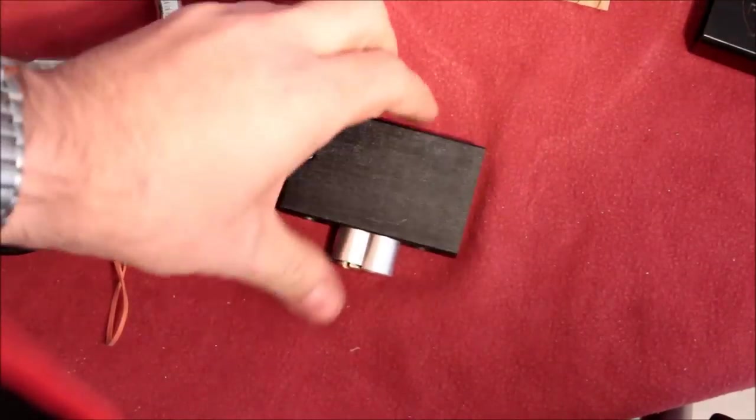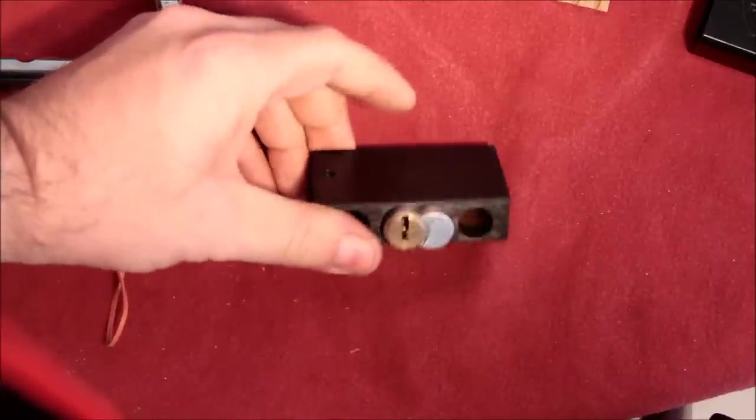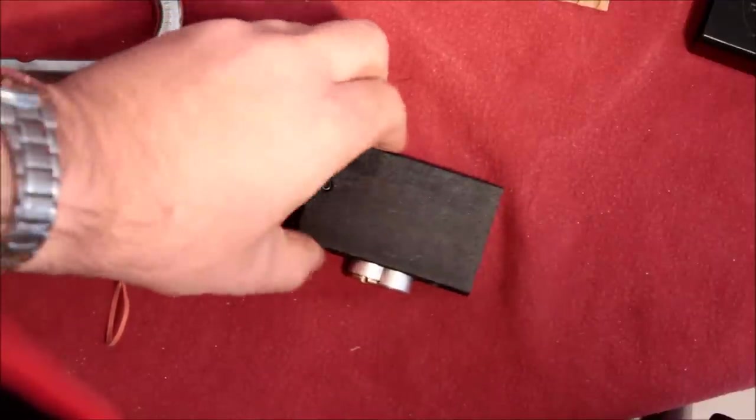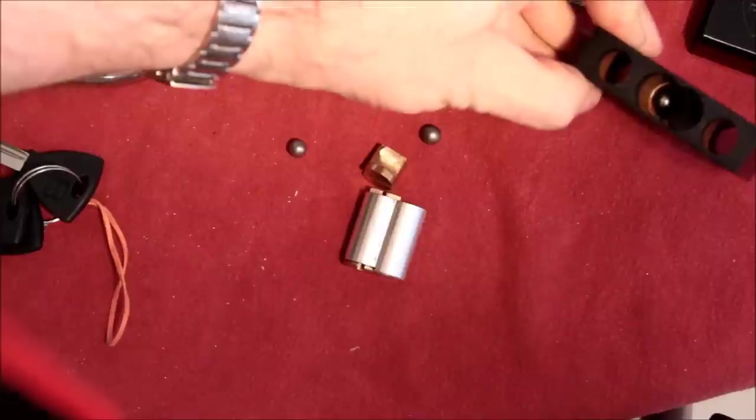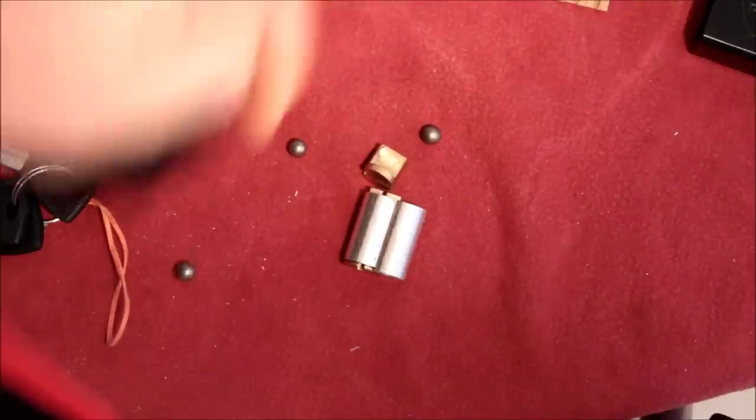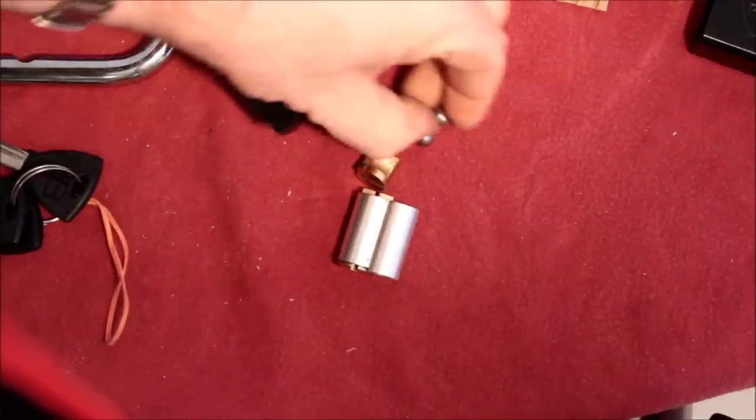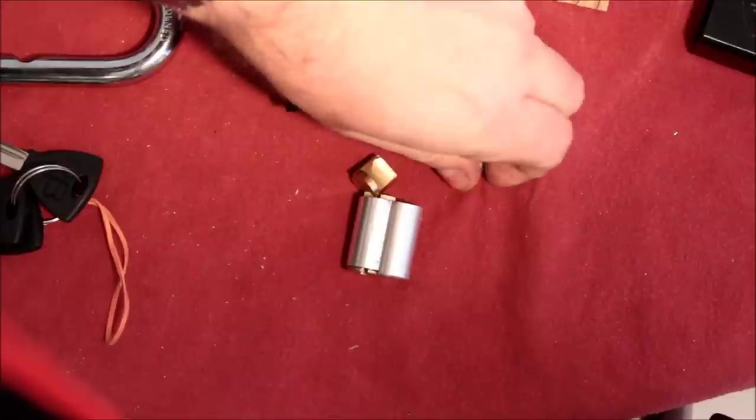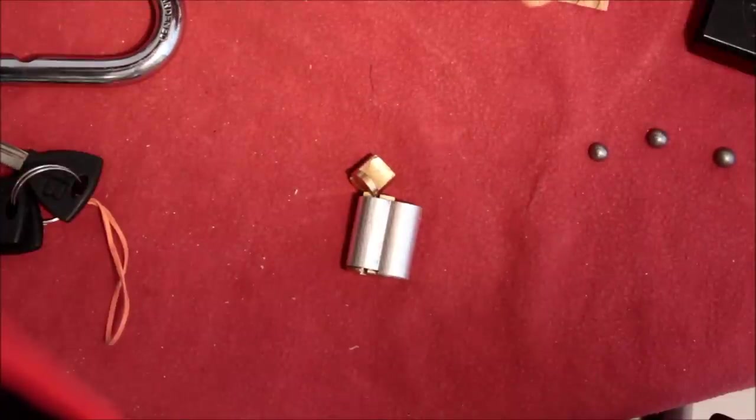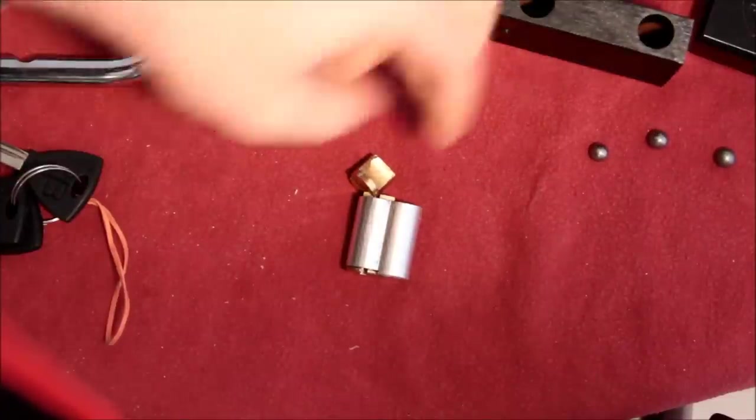Then we have the center bit, okay, with the lock core in it and the ball bearings. A lot of ball bearings, actually. I have to figure out what all three of those are for. And the actuator.